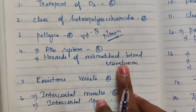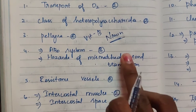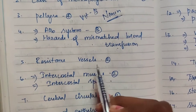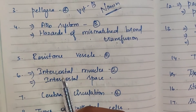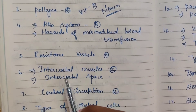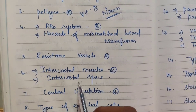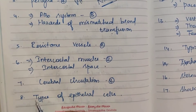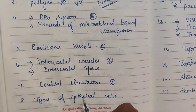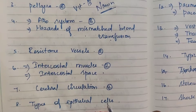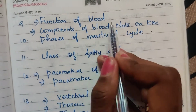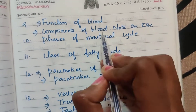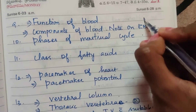ABO blood group system. Mismatched blood transfusion — that is a blood transfusion hazard — if you look at the circulatory system it can cause collapse. Fifth one: resistance vessels. Sixth one: intercostal muscles and intercostal space. Eighth one: types of epithelial cells. Ninth one: functions of blood, components of blood, RBC and red blood cells.